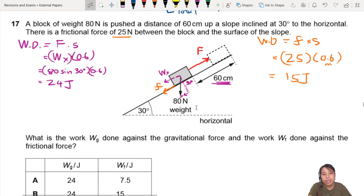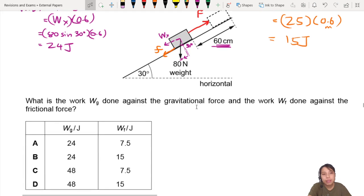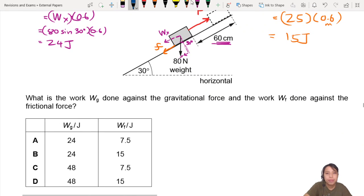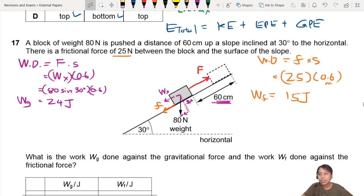So let's look for the answer. 24 done against gravitational, and 15 against friction. That will be 24 and 15. So this. Answer's B. So that is our inclined plane forces right here.